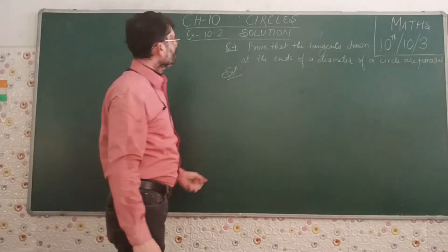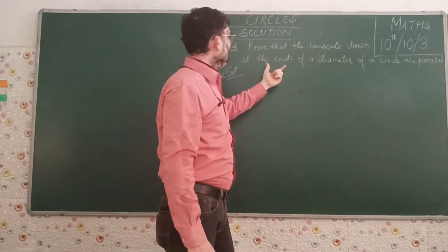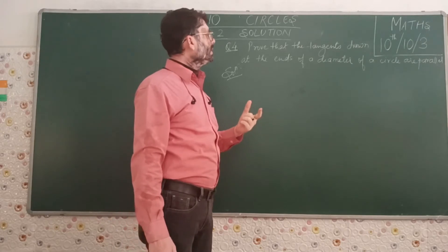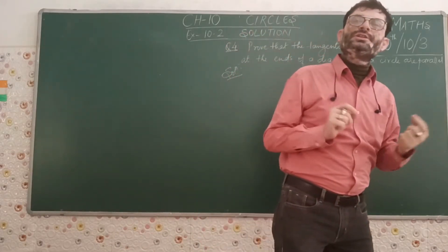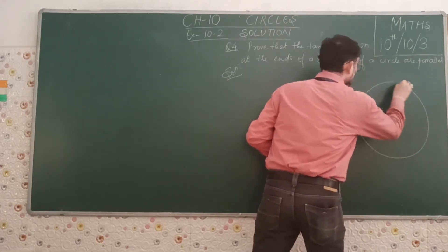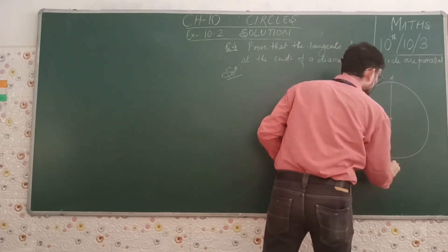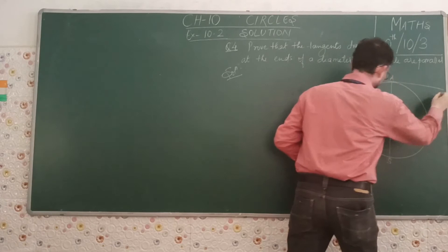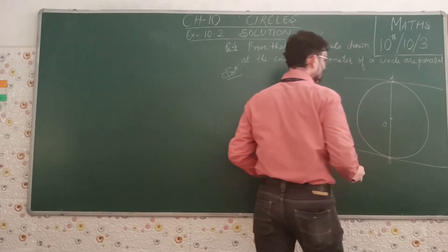Moving on to question number 4: prove that the tangents drawn at the ends of a diameter of a circle are parallel. We need to prove that two tangents, both lying at the endpoints of the diameter, are parallel. Let us draw a figure with circle center O and diameter AB, with two tangents drawn — one at A and the other at B.